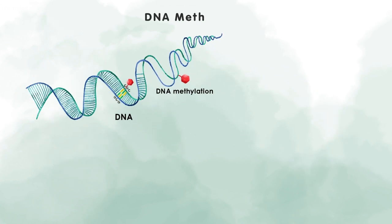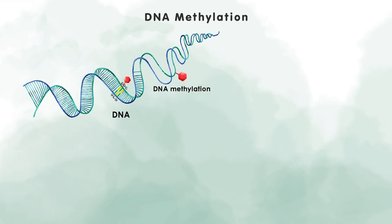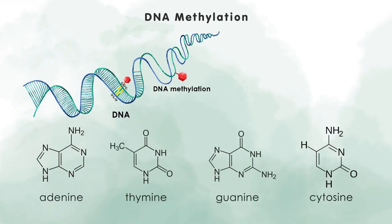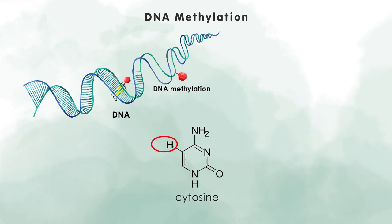DNA methylation is a very well-studied epigenetic mark. As most of you know, our DNA is built of four bases: adenine, thymine, guanine, and cytosine. DNA methylation occurs at the C5 position of the cytosine ring, where a methyl group is covalently attached by DNA methyltransferases.